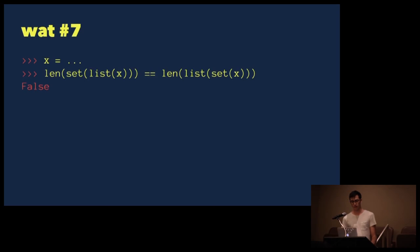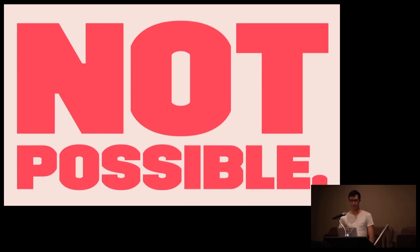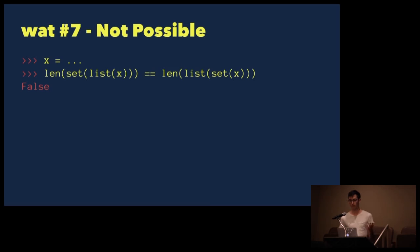Watt number seven: can we set x equal to something such that when we cast x to a list and then to a set and check the length, it's not the same as casting x to a set and then to a list and checking the length? This Watt is not possible. No matter what we set x to, converting it from a list to a set might reduce the length by eliminating duplicates, but converting a set to a list never adds elements. So there's nothing we can set x to such that this equation ends up being false.